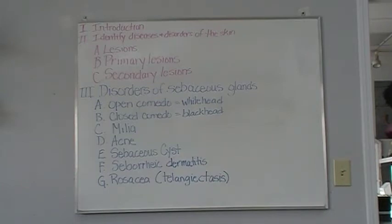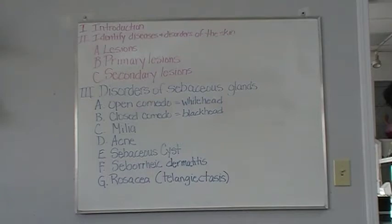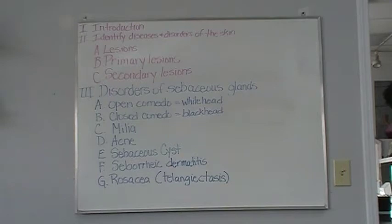Milia are essentially tiny comedones. They are benign, keratin-filled cysts that appear just under the epidermis and have no visible opening. They resemble small, round sesame seeds. Acne is a skin disorder characterized by chronic inflammation of the sebaceous glands from retained secretions and bacteria known as Propionibacterium acnes, the scientific term for acne bacteria. A sebaceous cyst is a large, protruding, pocket-like lesion filled with sebum. Sebaceous cysts are frequently seen on the scalp and the back and may be surgically removed by a dermatologist.